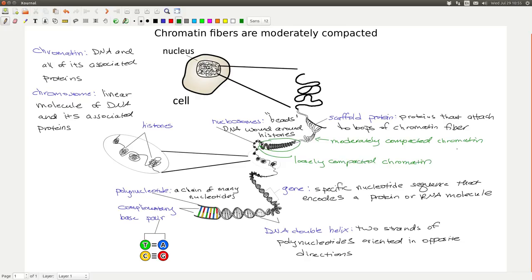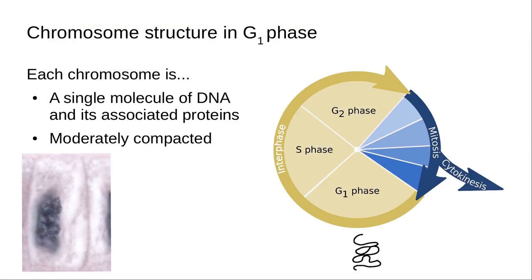Chromatin fibers can be further compacted by forming loops onto scaffold proteins. Scaffold proteins are proteins that attach to loops of chromatin fiber. At this point, if you were to look at your chromosome, you would describe it as being moderately compacted. If you look back at nucleosomes, you might describe that as loosely compacted chromatin. In interphase, your chromatin fibers are moderately compacted and you can't really distinguish individual chromosomes.